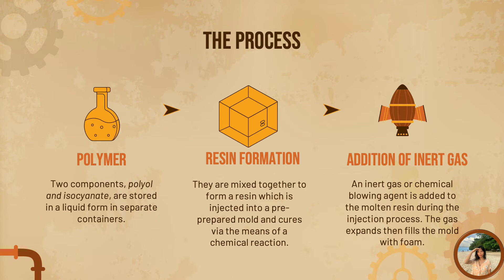Lastly, an inert gas or chemical blowing agent is added to the mix during the injection process. This changes the nature of the chemical reaction which ultimately occurs. Less polyol and isocyanate are used than in standard solid polyurethane reaction injection molding, so that the resin does not completely fill the mold. Instead, the gas or blowing agent is activated by the reaction between the two components, and it expands, filling the empty space of the mold with foam.